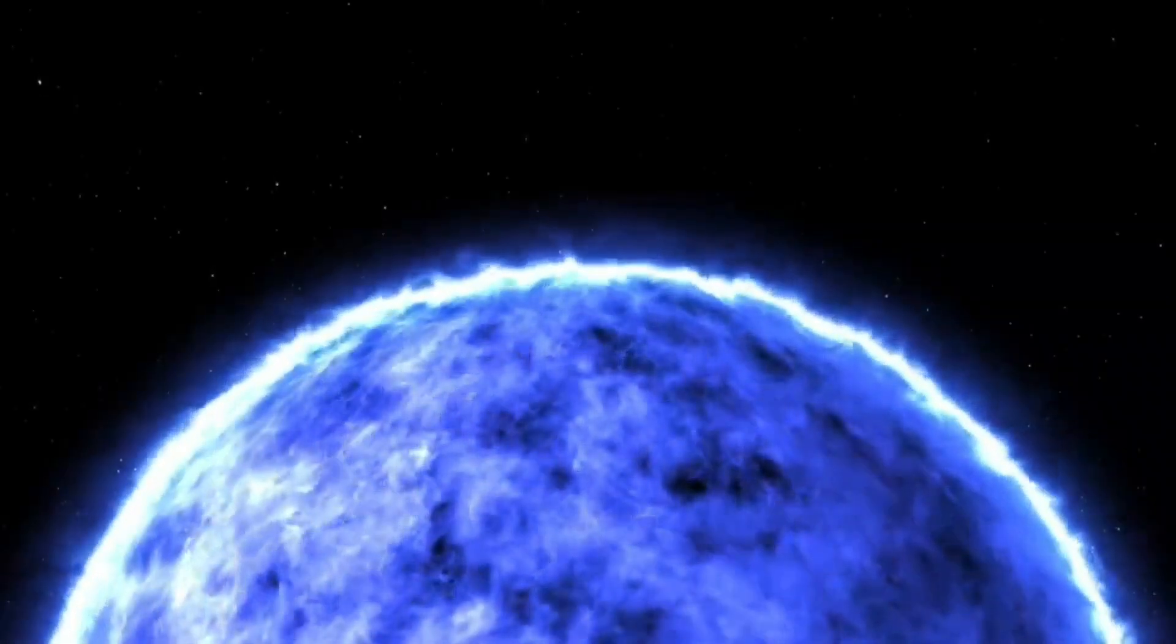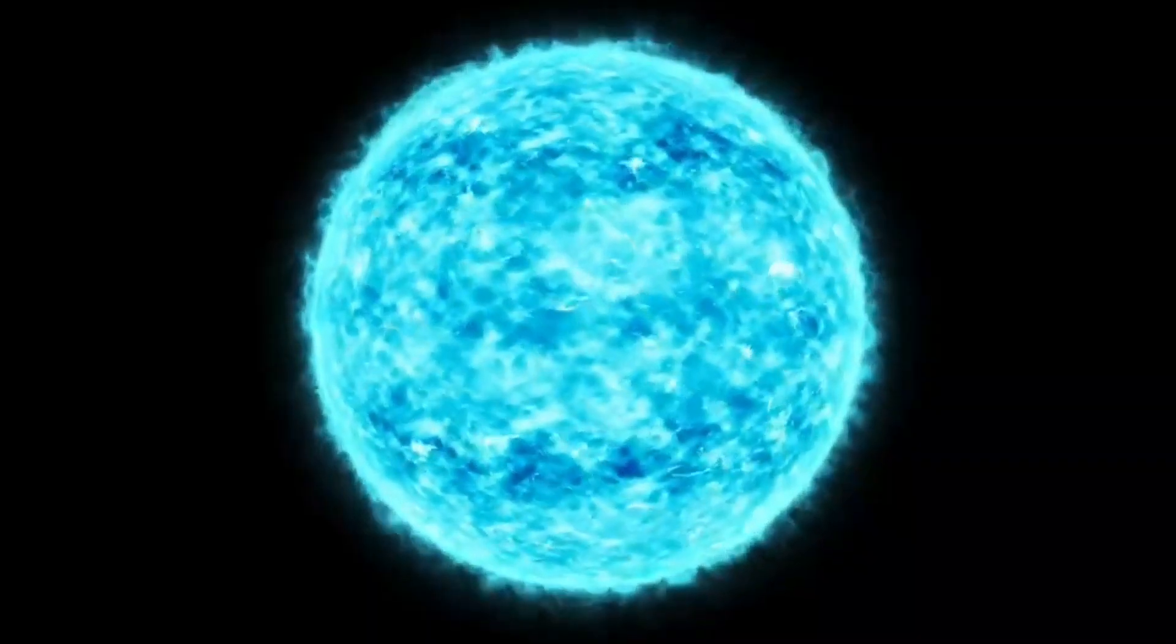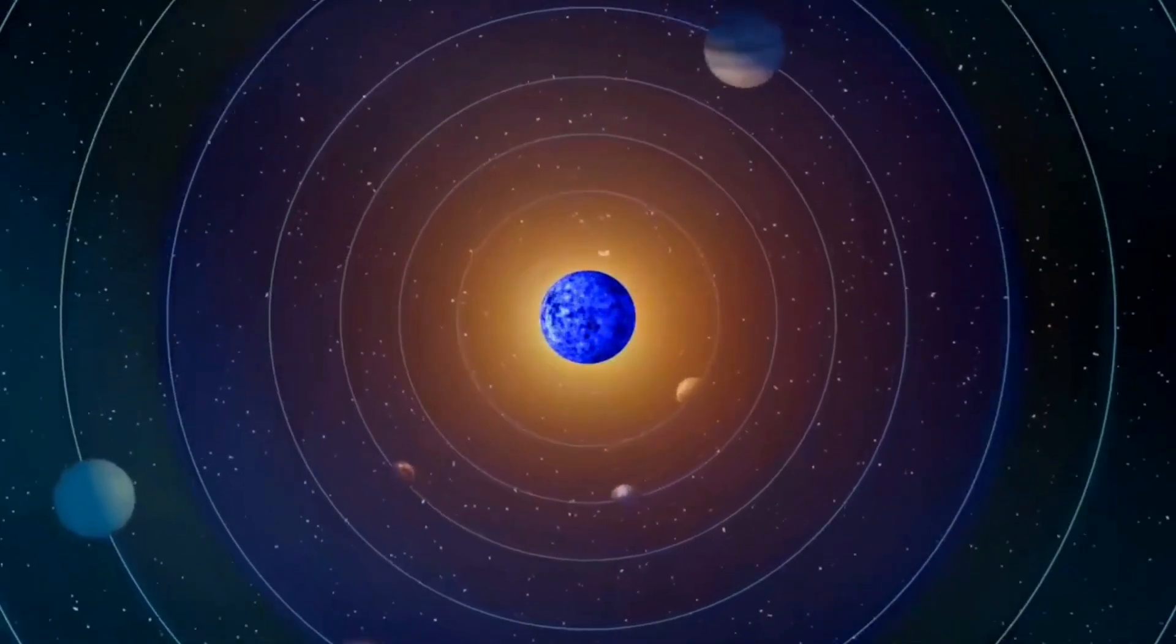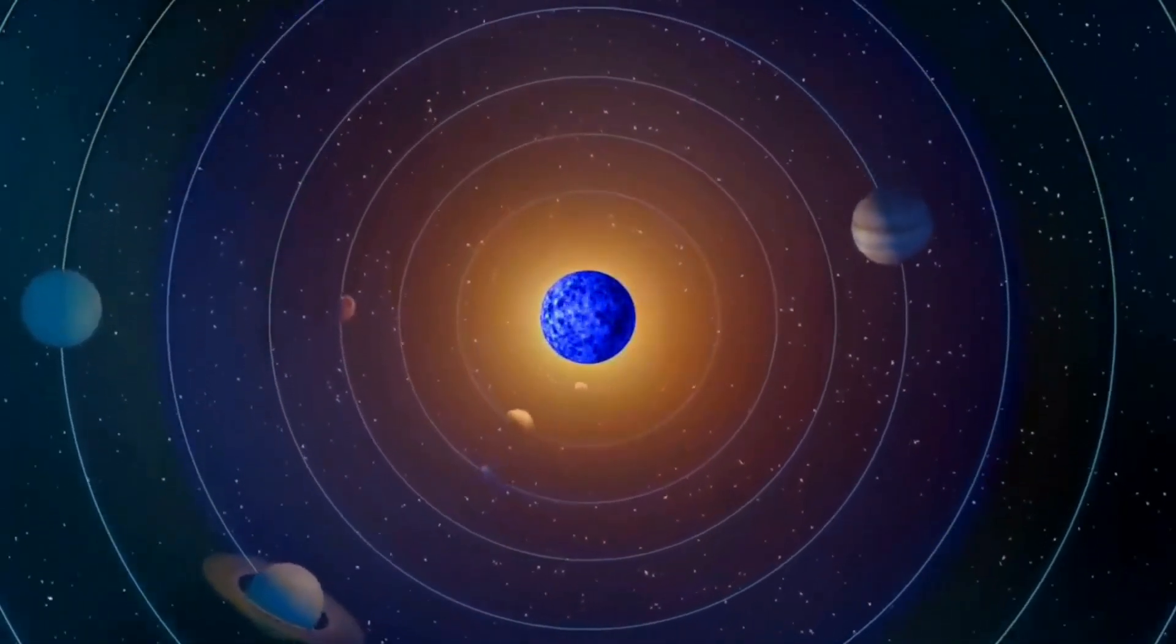A blue sun is hotter and brighter than a yellow one. If our sun turned blue, it would mean that it had become hotter and would emit more energy. The planets in our solar system would be affected by this sudden increase in heat and radiation.